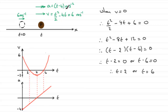The acceleration graph is linear. When T equals 0 you get minus 4, and when T equals 4 the acceleration is 0.